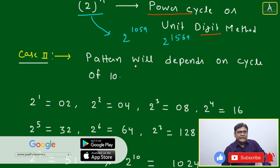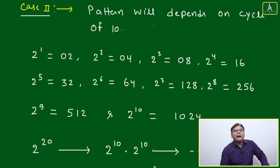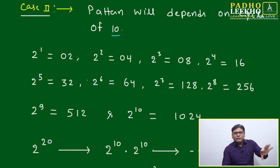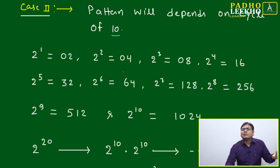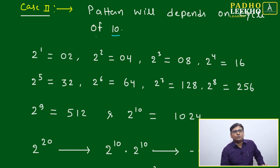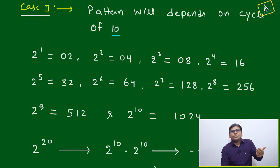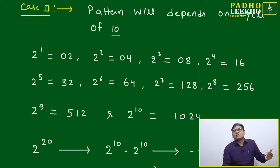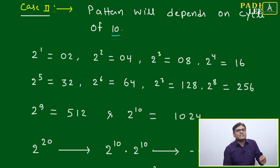Now we come to Case 2, which is more interesting and will be the main part of this master stroke. The pattern will depend on the cycle of 10 — the periodicity of 10. Here A is not a single digit number; A can be any 2-digit, 3-digit, 4-digit, or larger number. Just put a little more concentration for the next 2 minutes — put a little more effort — and you will be able to understand very easily how it works.